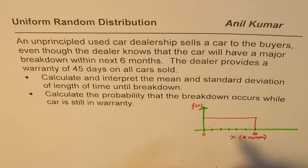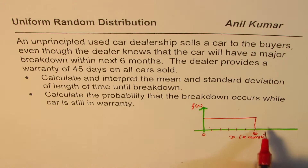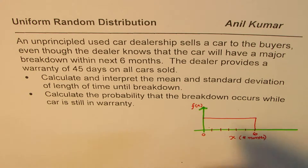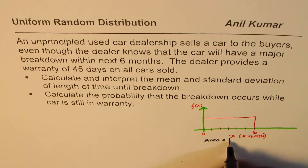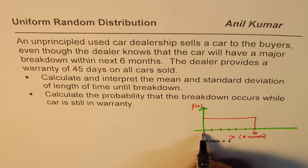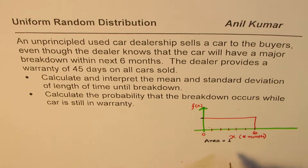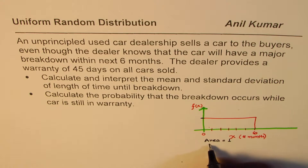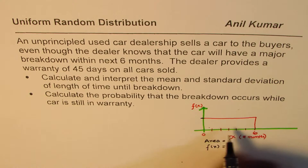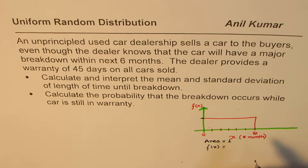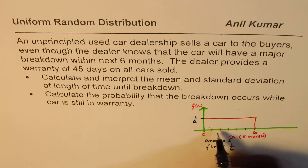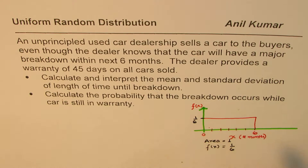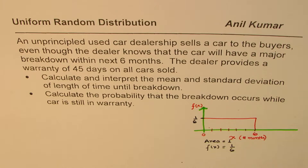The area under the curve should always equal 1, since all possible probabilities when summed equal 1. Since the length here is 6 minus 0, which is 6, f(x) should be such that when you multiply length by height you get area of 1. So f(x) equals 1 over 6. This probability density is uniform across these 6 months — that is the basic concept.